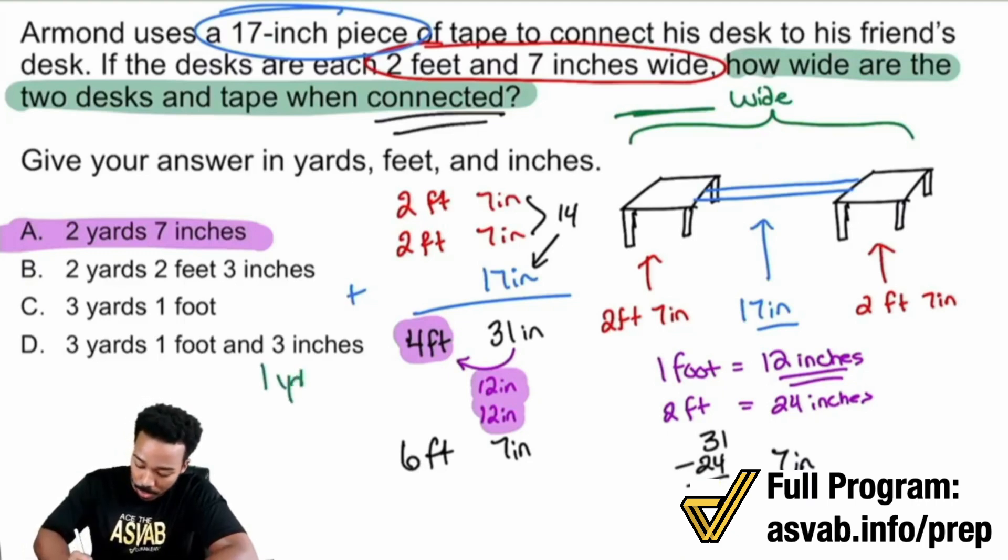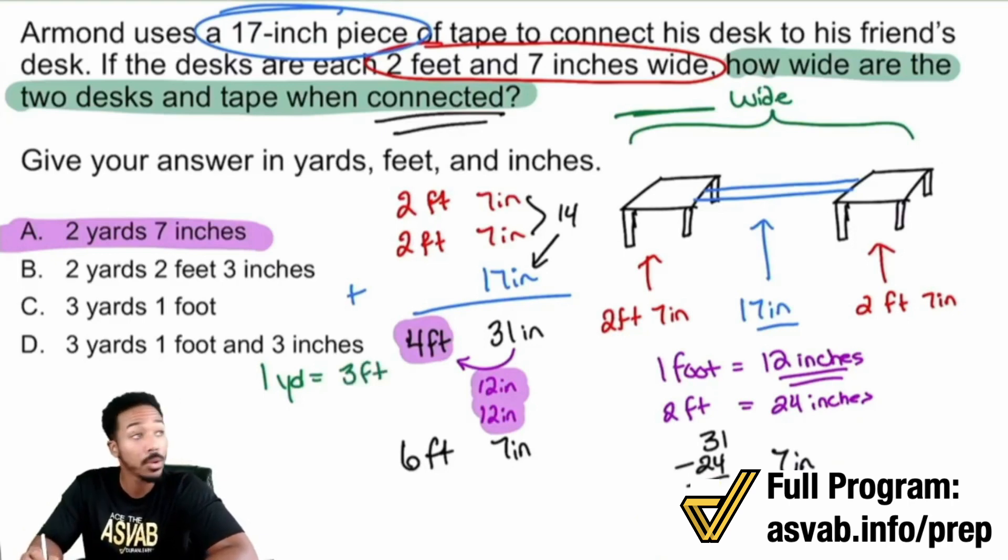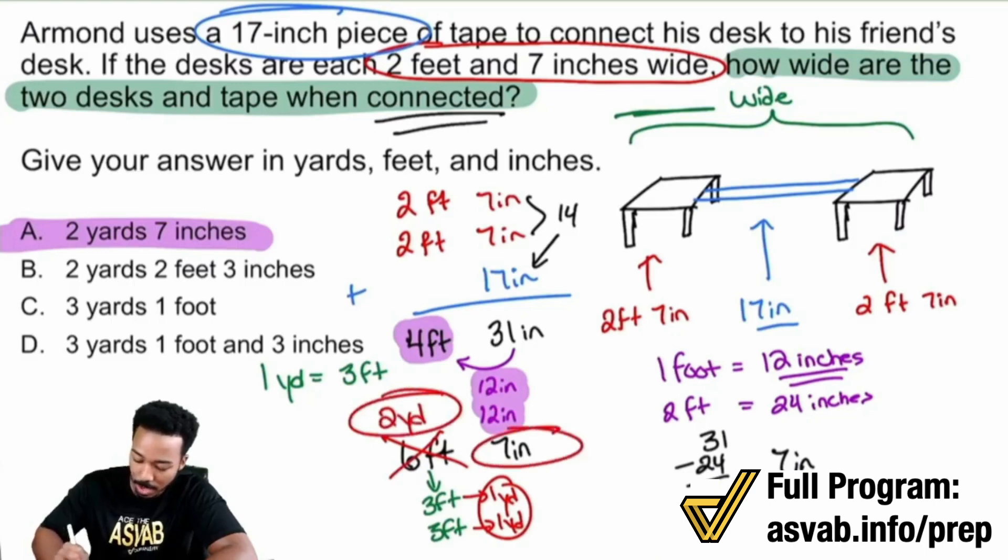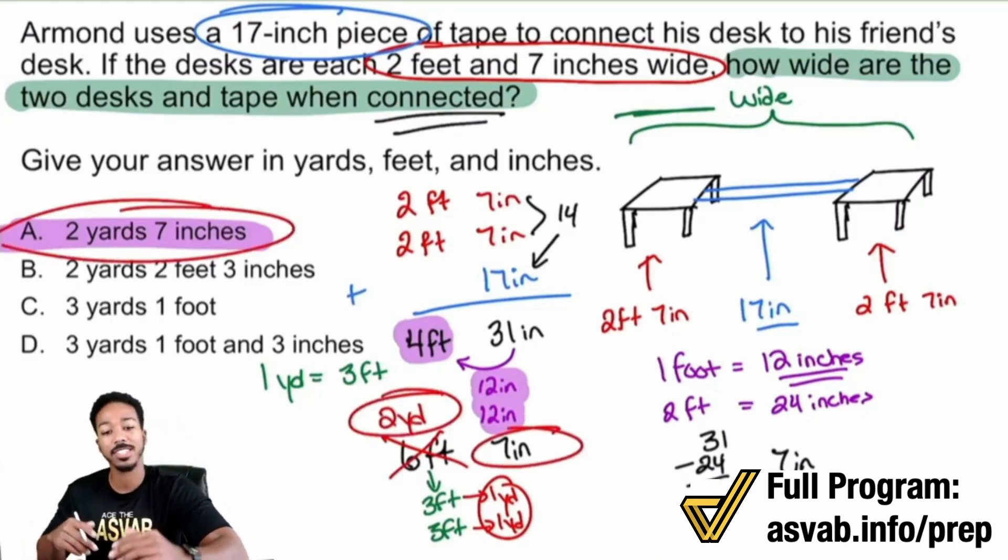But let me prove to you that A is the answer. We can also look at the conversion from feet to yards. You have to understand this as well: one yard equals three feet. We're going to use that fact. How many groups of three do we have? Six feet is the same thing as three feet and three feet. That's one yard and one yard, so two total yards. I can take that six feet and turn that into two yards. So I have two yards seven inches, and that's exactly why A is the answer.